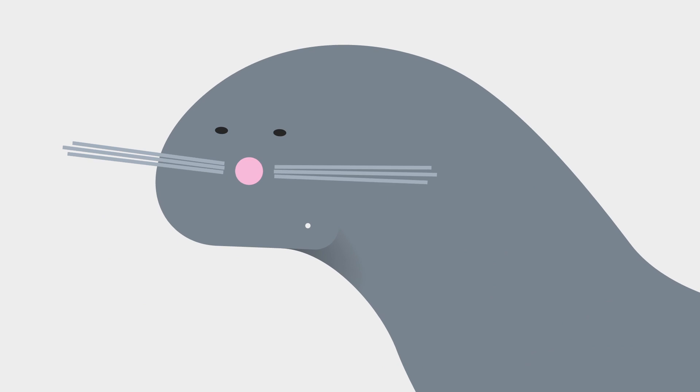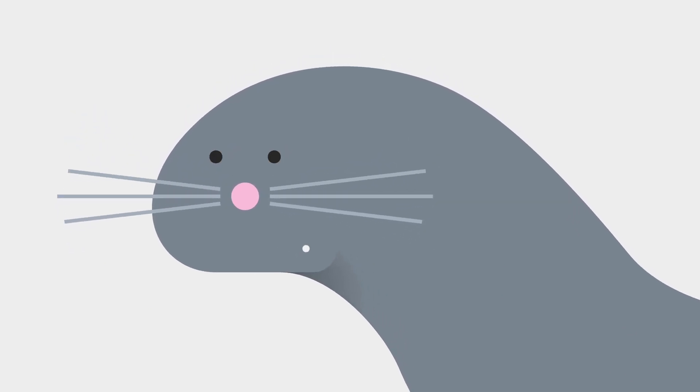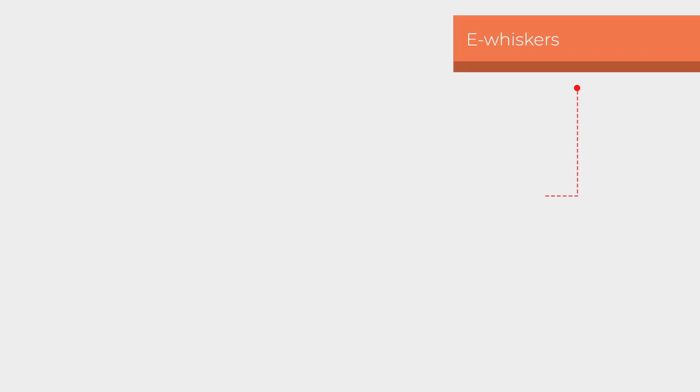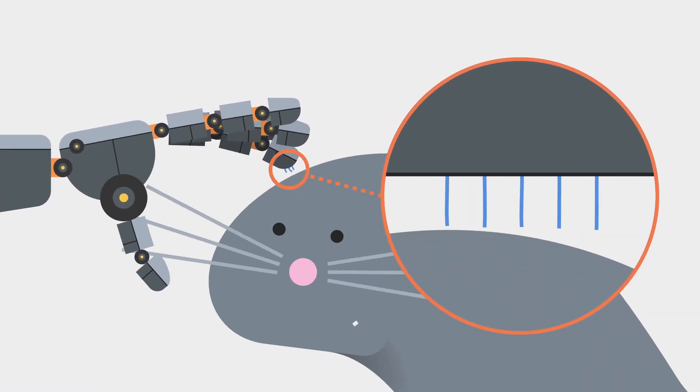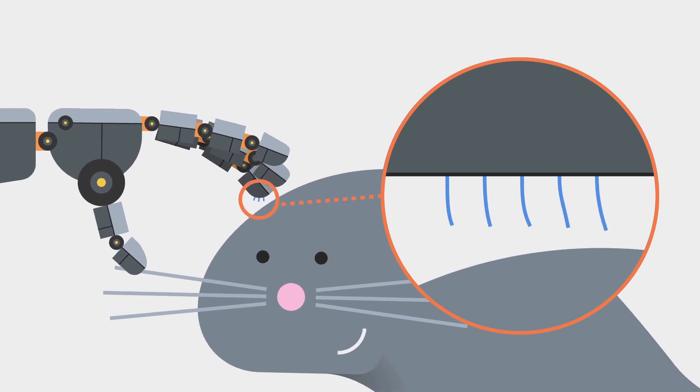Now, a new generation of hairs based on seal whiskers has been developed. These e-whiskers with micro-sensors are able to detect variables such as pressure, friction, or temperature.